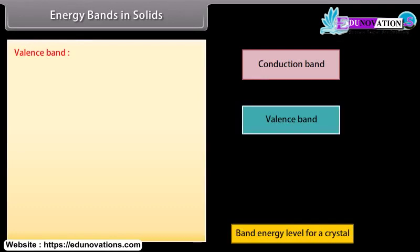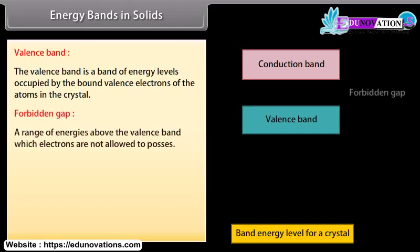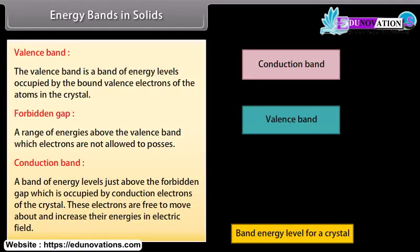The valence band is a band of energy levels occupied by the bond-valence electrons of the atoms in the crystal. The forbidden gap is a range of energies above the valence band which electrons are not allowed to possess. The conduction band is a band of energy levels just above the forbidden gap, occupied by conduction electrons of the crystal. These electrons are free to move about and increase their energies in an electric field.